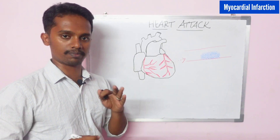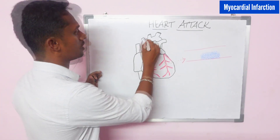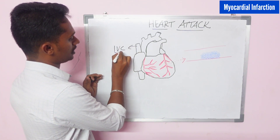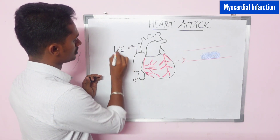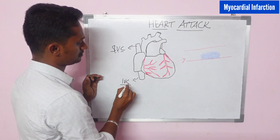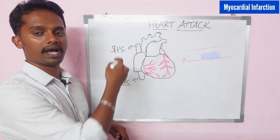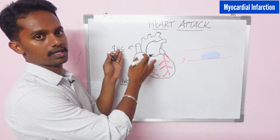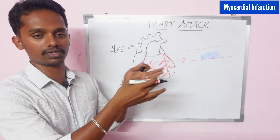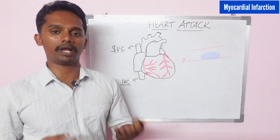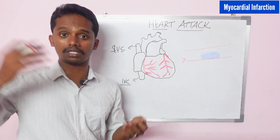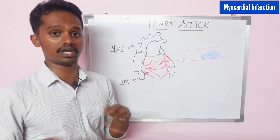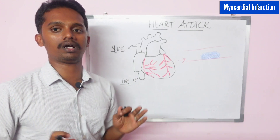If we study heart anatomy and physiology, we will study all these structures. We have the aorta, then the inferior vena cava — sorry, this is the superior vena cava, and this is the inferior vena cava. The blood flows into the right atrium, then the right ventricle. Then we have the left atrium, then the left ventricle, and then the aorta. This is the normal heart function.